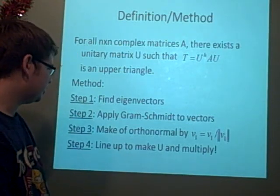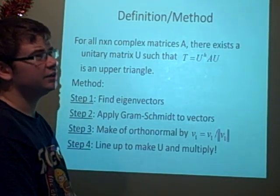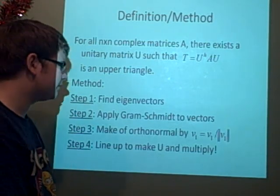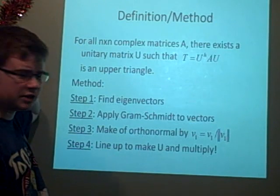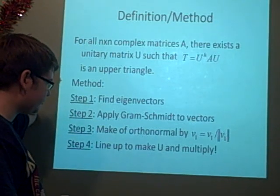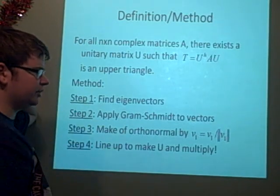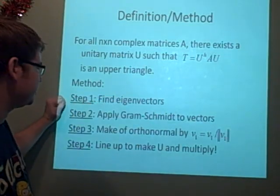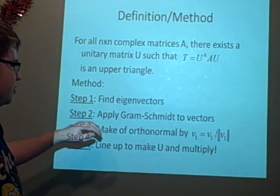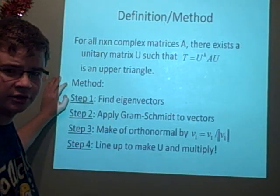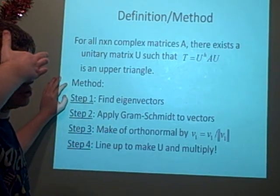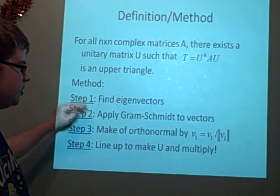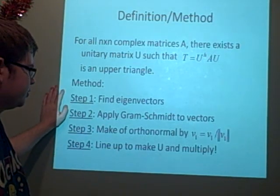The method: the example that I've chosen didn't work out too nicely, but hopefully it'll make it easier to understand because it's a bit messy. First, you've got to find the eigenvectors of your matrix A, so you need the eigenvalues and the eigenvectors. Next you want to apply the Gram-Schmidt to the vectors so it makes them orthogonal.